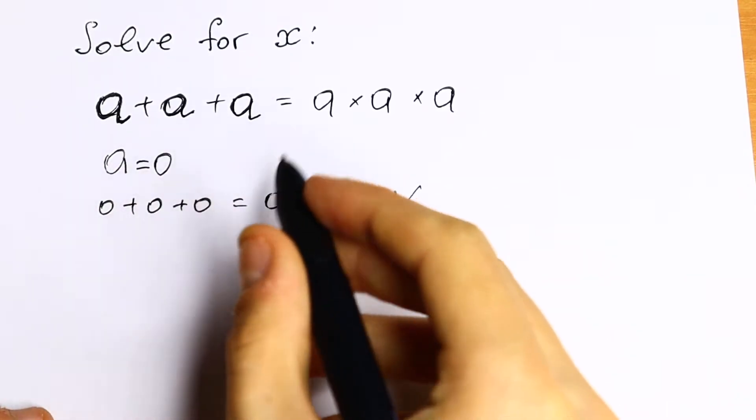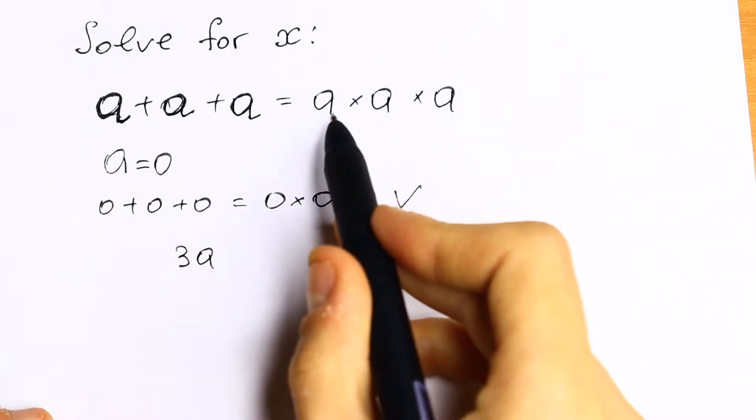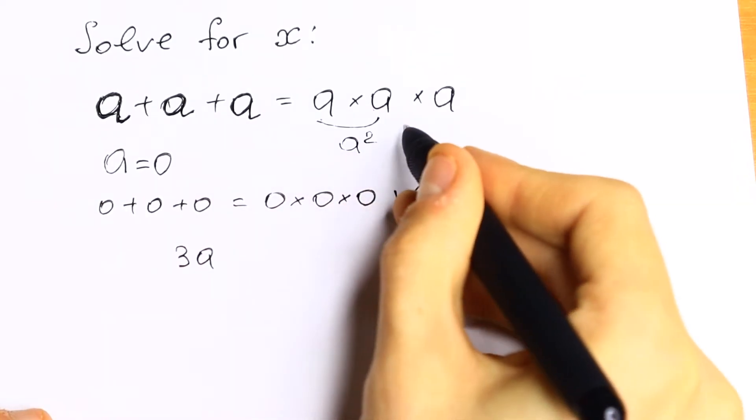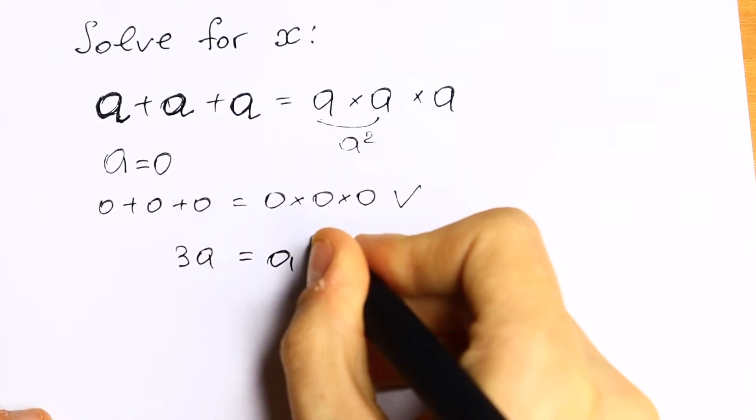a plus a plus a will be 3a and of course we can multiply this: a times a will be a squared and if we multiply once more we will have a cubed. So 3a equal to a cubed.